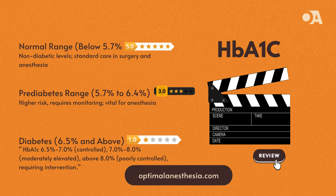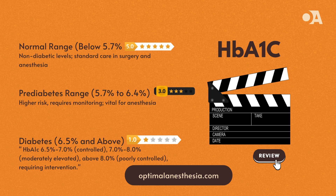This long-term view is especially important for anesthesiologists, because understanding a patient's HbA1c level can influence how we manage their care during surgery. HbA1c values below 5.7% indicate non-diabetic blood sugar levels. For anesthesiologists, this means no significant implications for surgical or anesthetic management beyond standard care — patients in this range generally don't need special interventions related to blood sugar control.